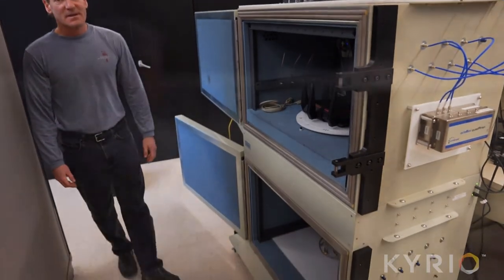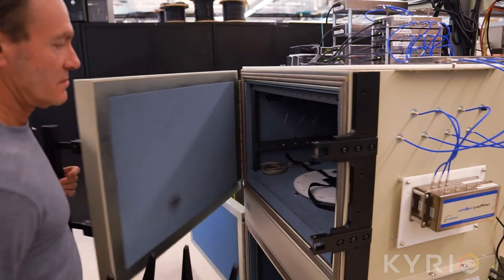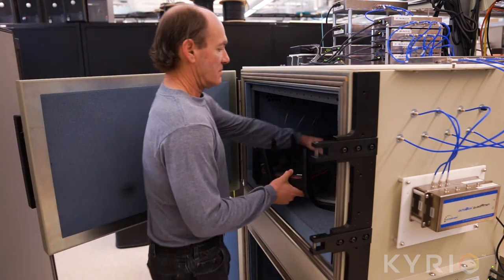The two-chambered model of the Octabox allows us to test interoperability between two devices for things such as handover from Wi-Fi to Wi-Fi or Wi-Fi to LTE. This allows us true interoperability testing in a controlled environment.